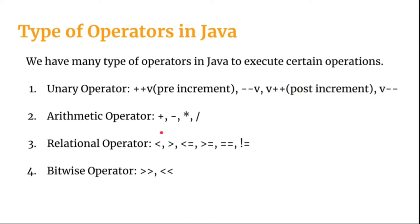Next are arithmetic operators — the very basic operators we need to execute simple arithmetic operations like addition, subtraction, multiplication, and division. We also have relational operators, which help us establish relationships between two variables: less than, greater than, less than or equal to, greater than or equal to, equal to, and not equal to.